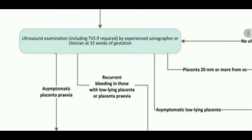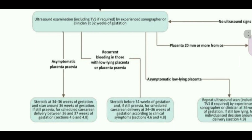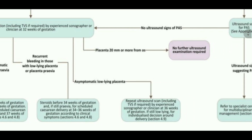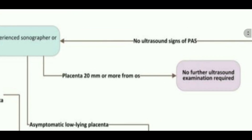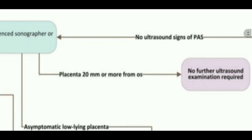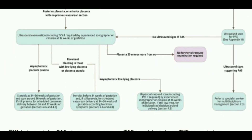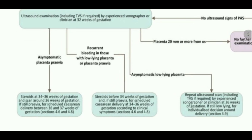At the 32-week scan we can find either asymptomatic placenta previa, asymptomatic low-lying placenta, or — in the middle group — patients with recurrent bleeding associated with low-lying placenta or placenta previa. So on the sides we have asymptomatic patients and in the middle we have the symptomatic patients. There is also a group where the placenta is 20 mm or more from the os at 32 weeks, in which case no further ultrasound examination is required.